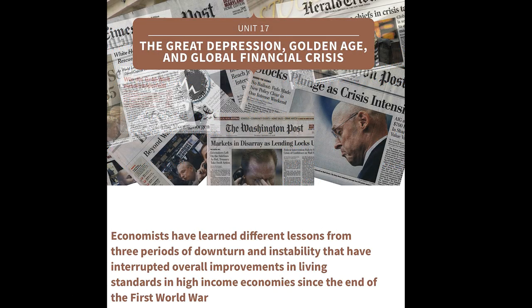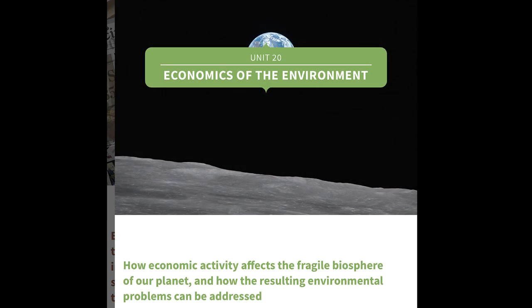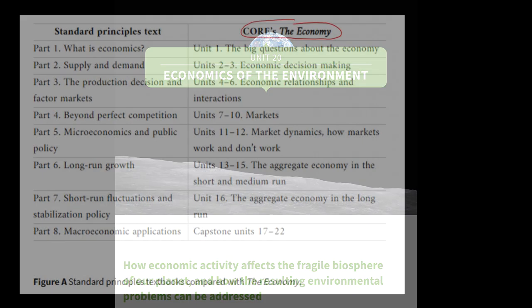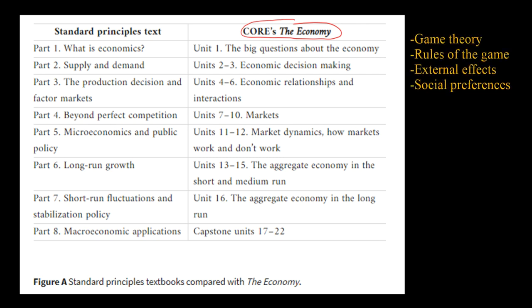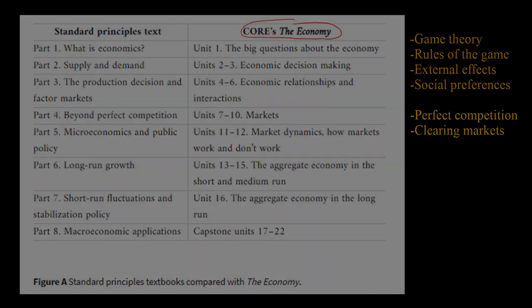One of those capstone units gives 100 years of economic history, and is a really fantastic way for students to bring together all the work they've done on macroeconomics, using different macroeconomic models from the Great Depression to the global financial crisis. So what we've done is to bring to the front of the book game theory, the rules of the game as a way of thinking about institutions, external effects and social preferences. And what now comes later is perfect competition and clearing markets — all of those supply and demand curves.